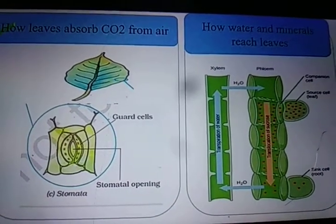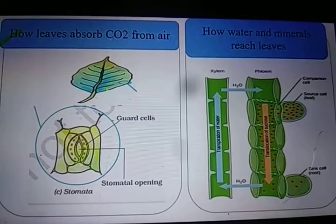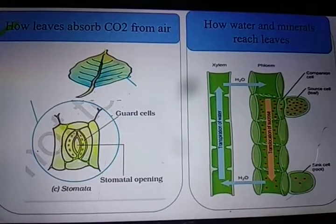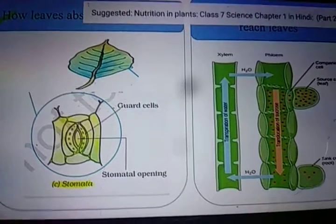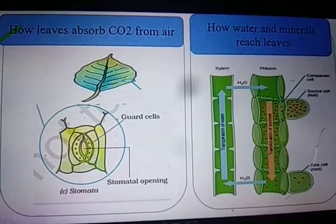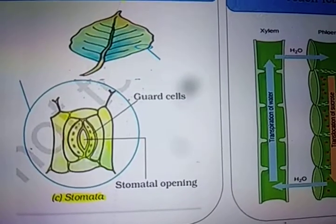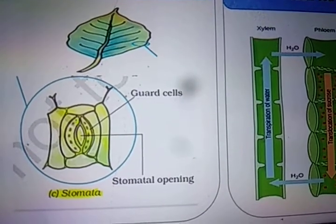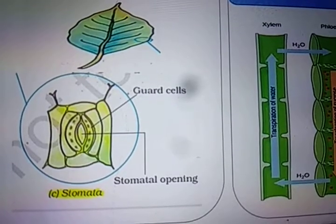Let's understand how leaves absorb carbon dioxide from air. There are tiny, numerous pores present on the leaf surface. These pores are called stomata. Through the stomata, the plant absorbs carbon dioxide from the air. Each stoma is surrounded by a guard cell, as you can see on screen.